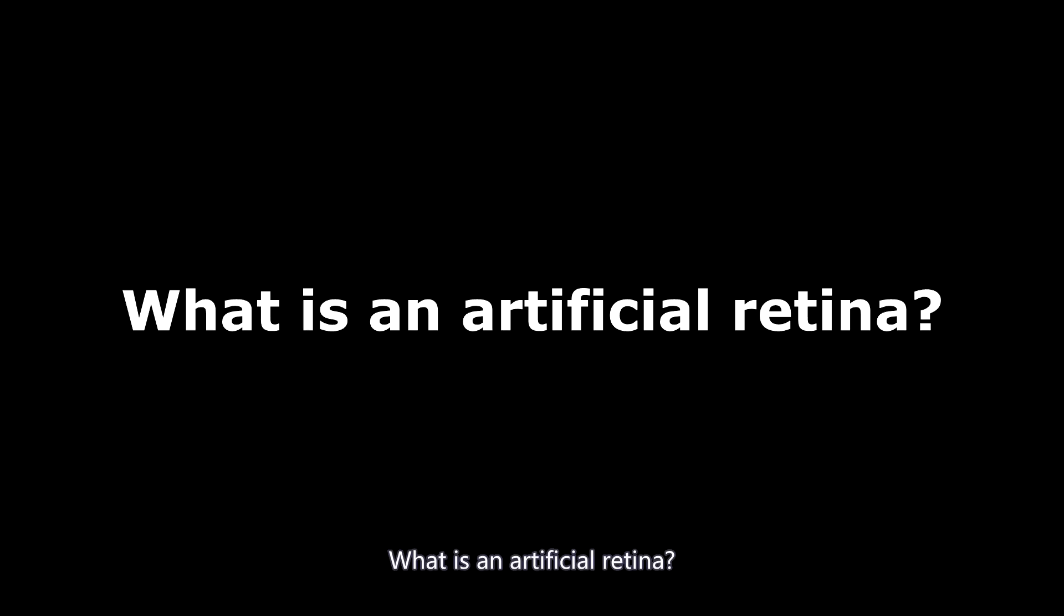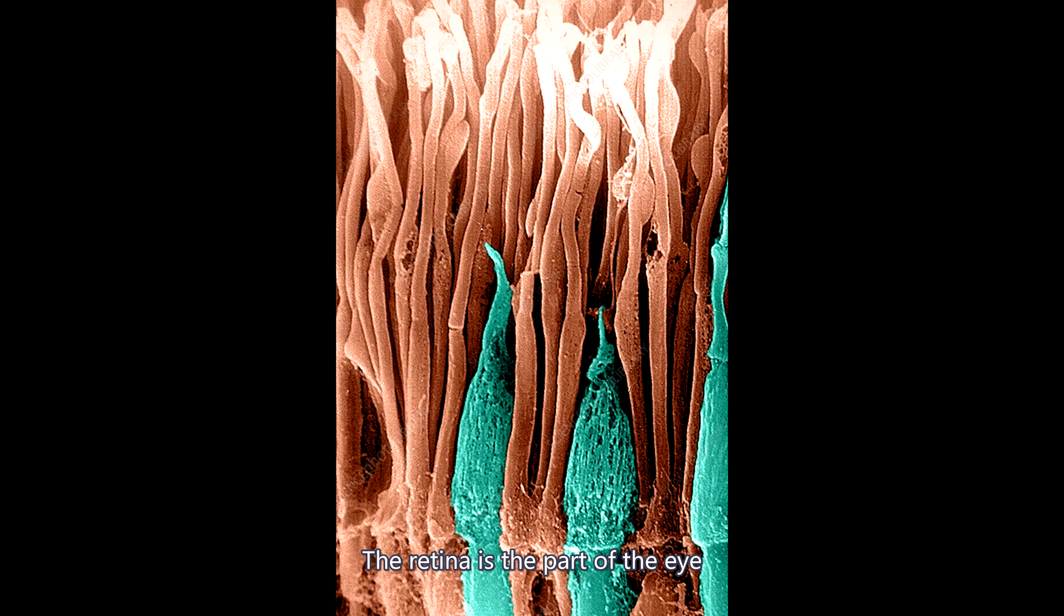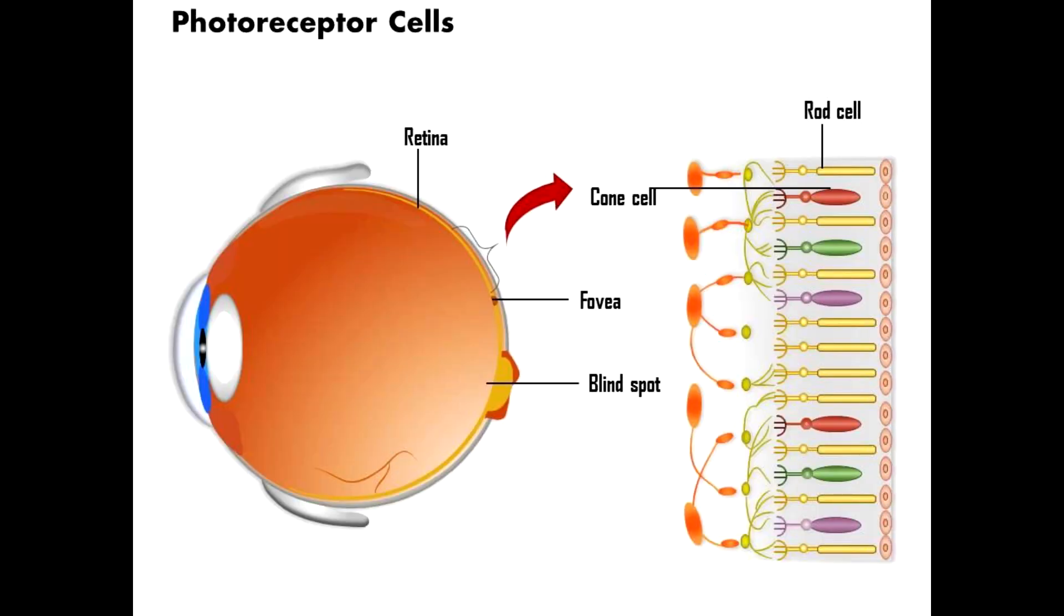What is an artificial retina? The retina is the part of the eye that senses and sends light signals. It is made of many different cell types which all play a unique role in vision.